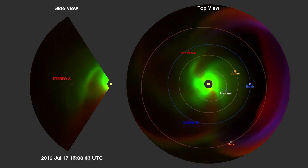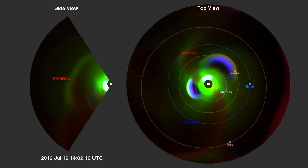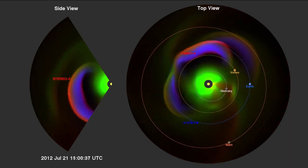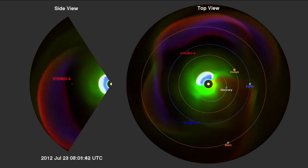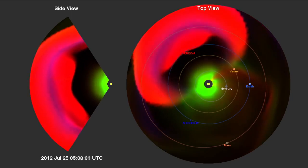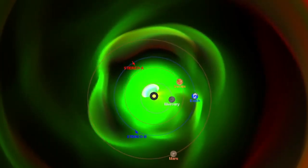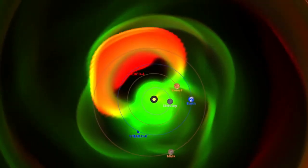The main event is preceded by a few smaller CMEs, one of which was Earth-directed. It is immediately clear how much larger and faster the July 23rd CME was, as it blasted toward STEREO A.